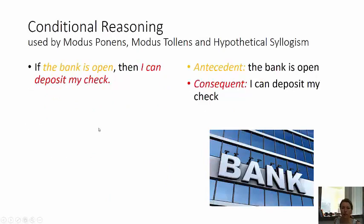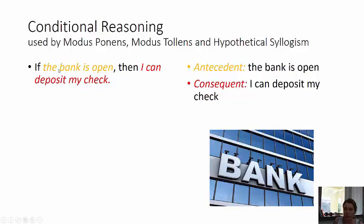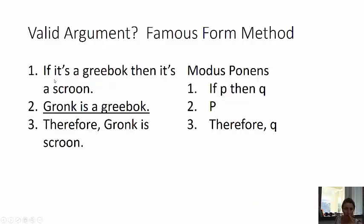Conditional reasoning is used by modus ponens, modus tollens, and hypothetical syllogism. Any conditional is an if-then statement — for example: if the bank is open, then I can deposit my check.